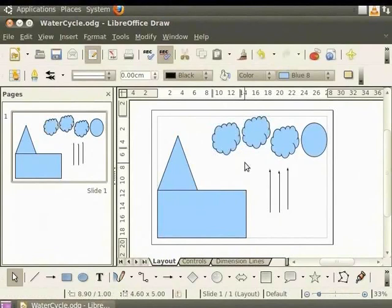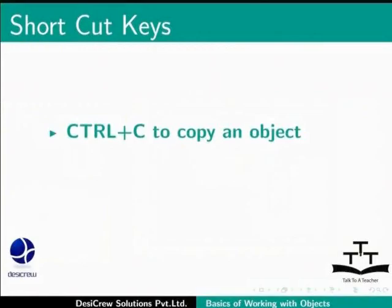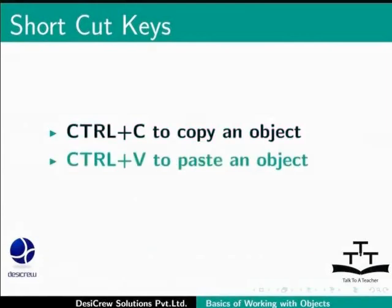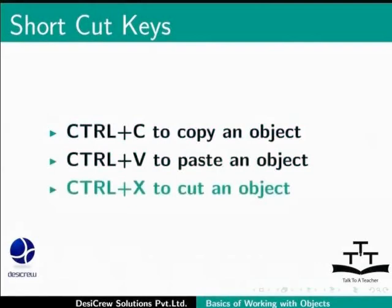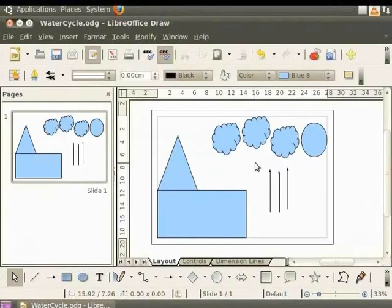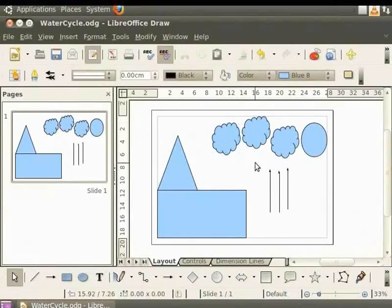We can also use shortcut keys to make copies of the objects. Ctrl plus C to copy an object, Ctrl plus V to paste an object, Ctrl plus X to cut an object. Select the cloud and press Ctrl and C keys together. The clouds have been copied. To paste, press Ctrl and V keys together. Now select the cloud and move it to the desired location.